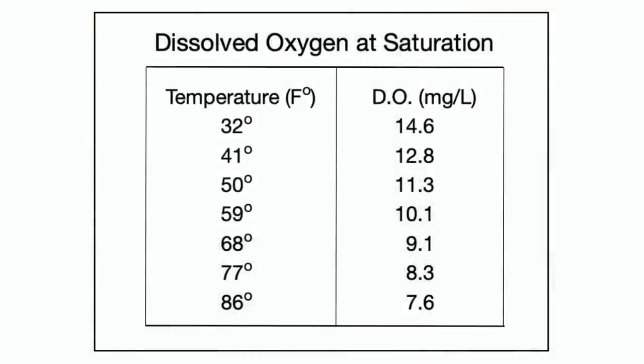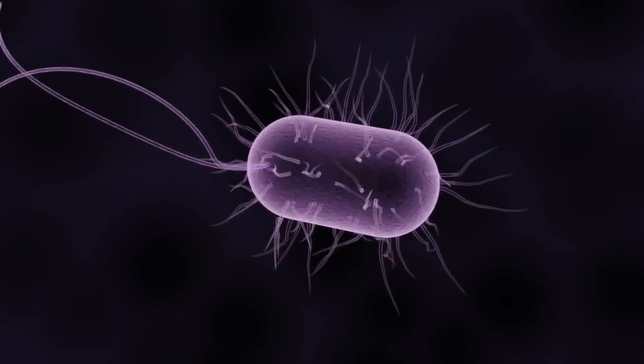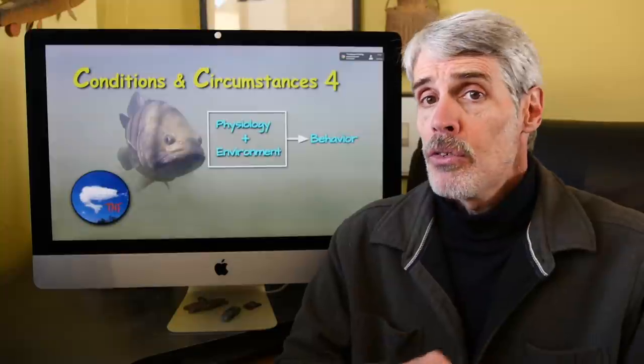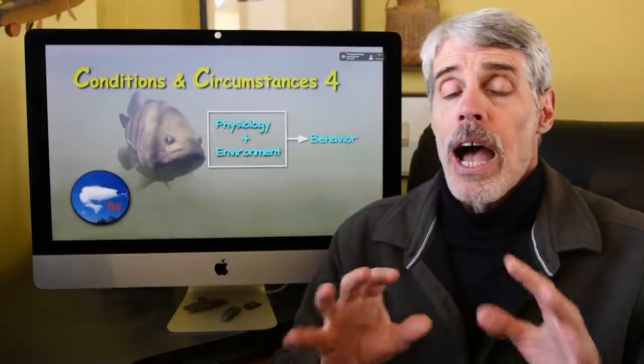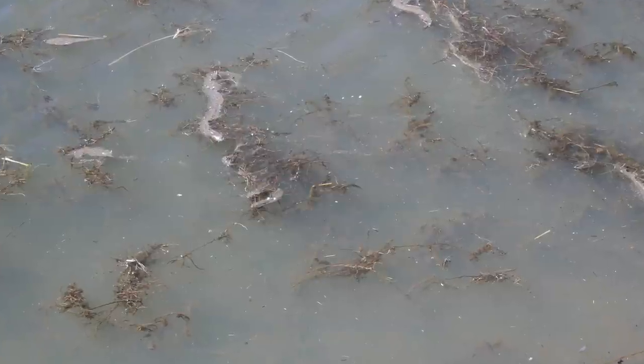Two things are at work here that can cause excessive oxygen depletion. First, water bodies hold less and less oxygen as water temperatures rise. And bacteria numbers that decompose organic materials explode. These two factors together, high water temperatures and a major decomposition event of all that vegetation, can deplete water oxygen levels down to even dangerous levels to fish.